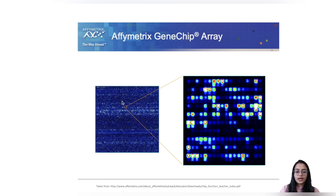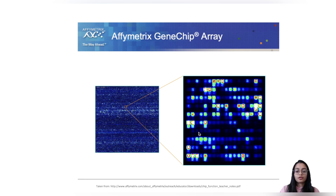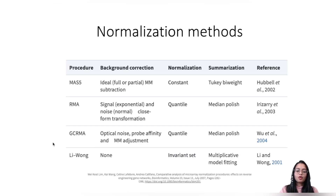This image shows an actual expression array after scanning, with the right image being a zoomed-in section. Black spots indicate no RNA hybridized with the probes, and intensity goes from dark blue (lowest) to red or white (highest). Higher intensity means more RNA fragments hybridized, indicating higher gene expression. These are some of the common normalization methods available for microarray data, but today we will use the RMA method.